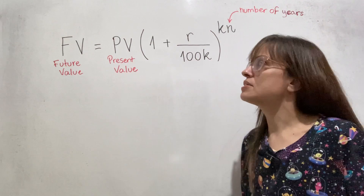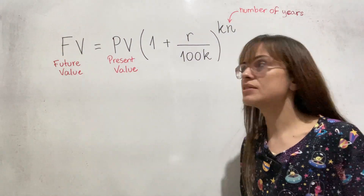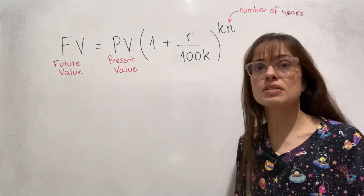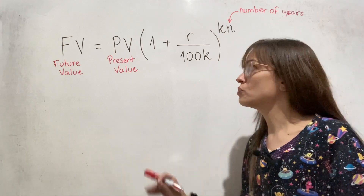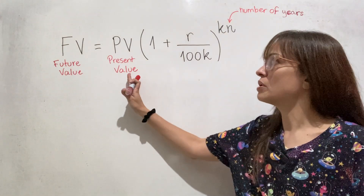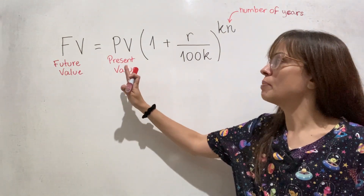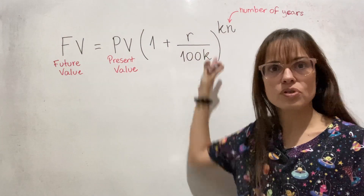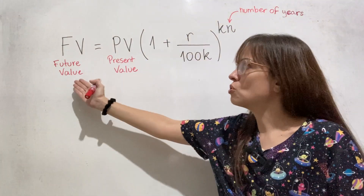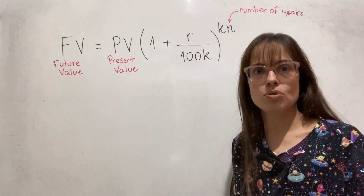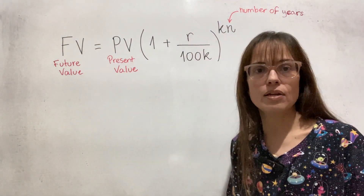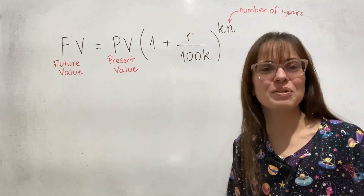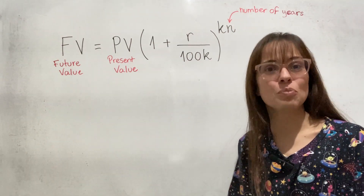FV stands for the future value of an investment. PV stands for the present value of an investment — this is the amount of money that you put in the bank today. And then after this happens for a certain amount of time, it's going to turn into that value in the future. Hopefully it's a larger value because you want to get more money.